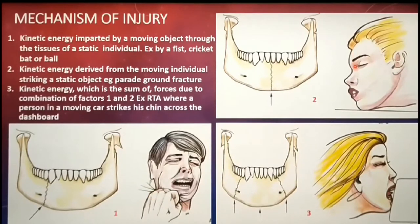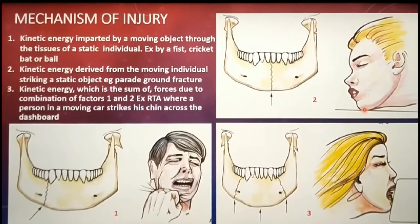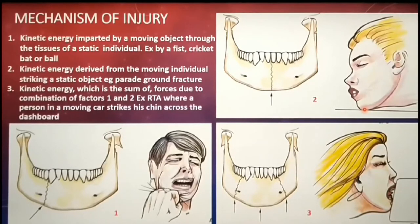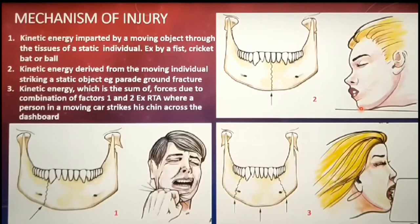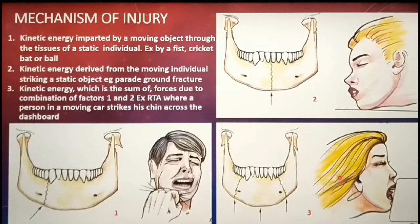The second type of force is that of a moving individual striking a static object, such as a child falling and hitting the chin against the pavement. This mechanism is also seen in parade ground fracture, wherein a standing soldier collapses, hits his chin onto the ground, and fractures his condyle or mandible. The third type is energy developed by a combination of the first two mechanisms.